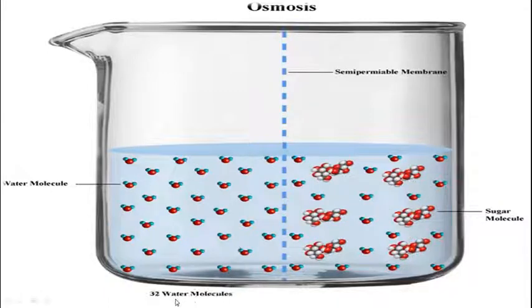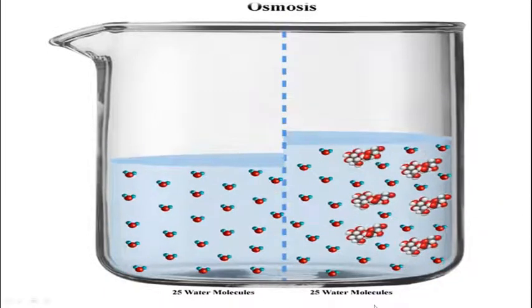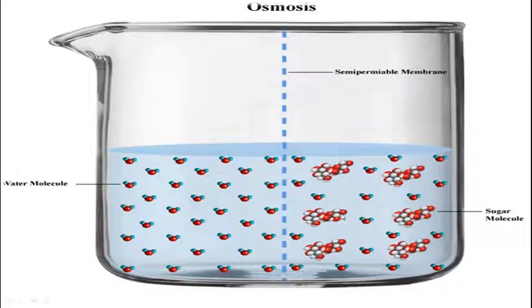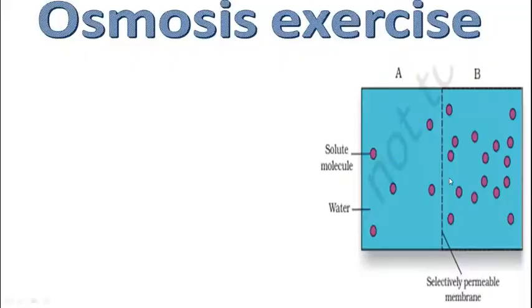Here is the setup with 20-32 and 18 water molecules on one side, and 25 molecules on the other side. This is osmosis — osmosis is an experiment demonstrating the movement of water molecules across the membrane.